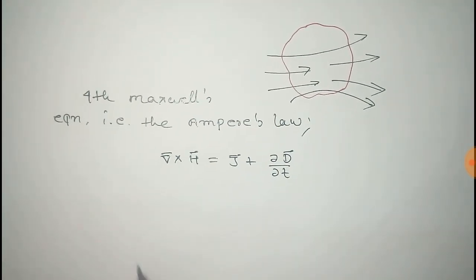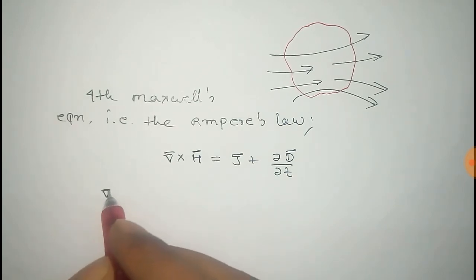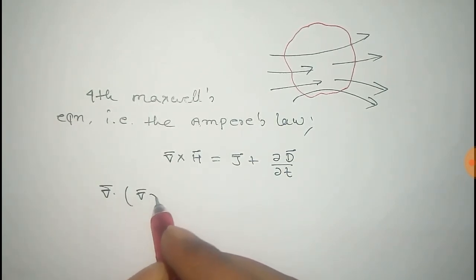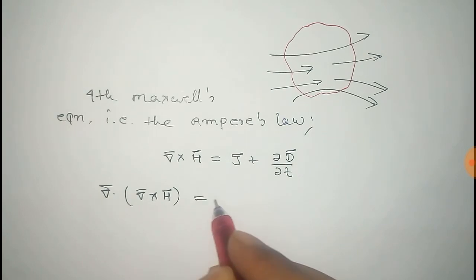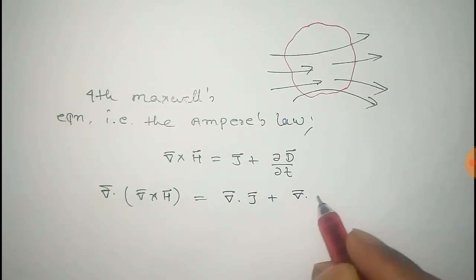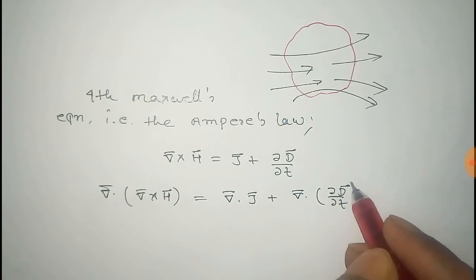Now, taking divergence on both sides of this equation, we get divergence of curl H is equal to divergence of J plus divergence of del D del T.